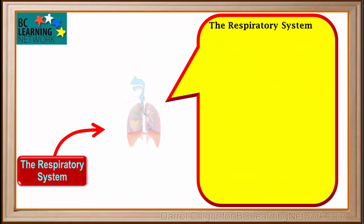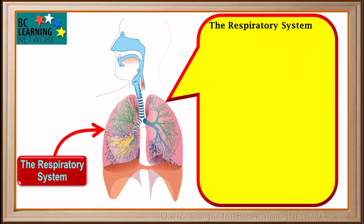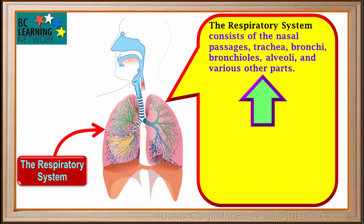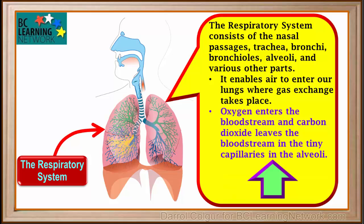The respiratory system consists of nasal passages, trachea, bronchi, bronchioles, alveoli, and various other parts. It enables air to enter our lungs, where an exchange of gases takes place. Oxygen enters the bloodstream, and carbon dioxide leaves the bloodstream through the thin walls of the tiny capillaries in the alveoli.